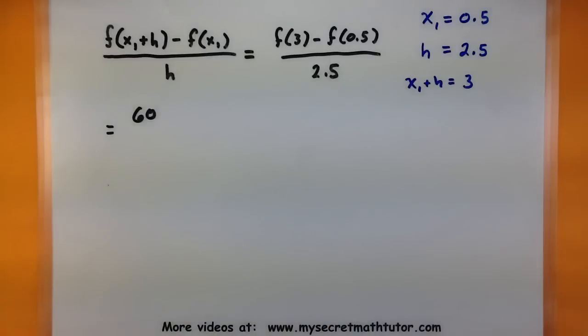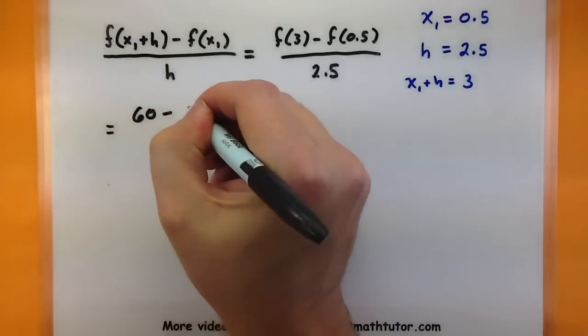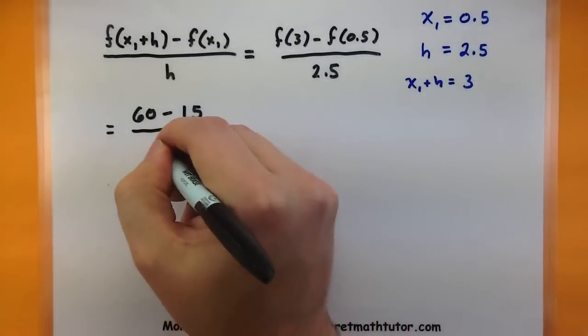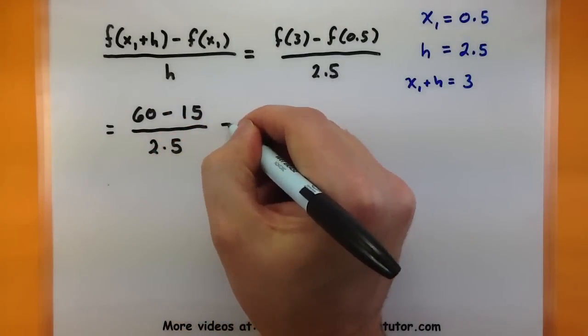The second part is our distance at a half hour. According to the problem, this is 15 miles all over 2.5.